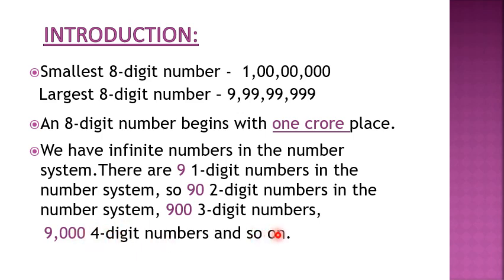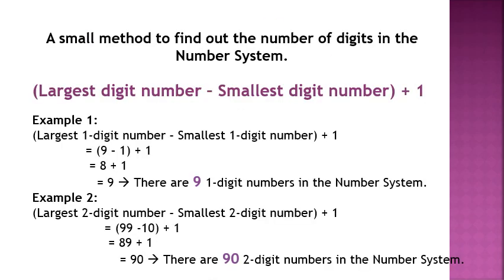So on means it goes on. We can say we have ninety thousand five-digit numbers, nine lakh six-digit numbers, and so on. We can also know this by a small method. Here is a method to find out the number of n-digit numbers in the number system. One method is to directly use the pattern which I have just explained. The other method is to solve using a formula.